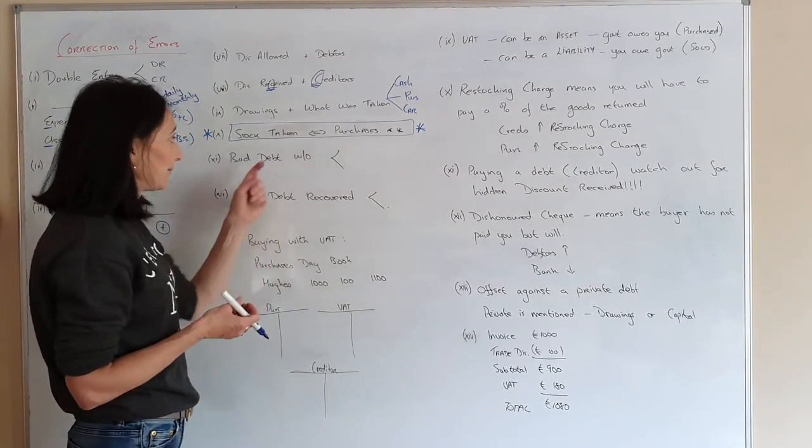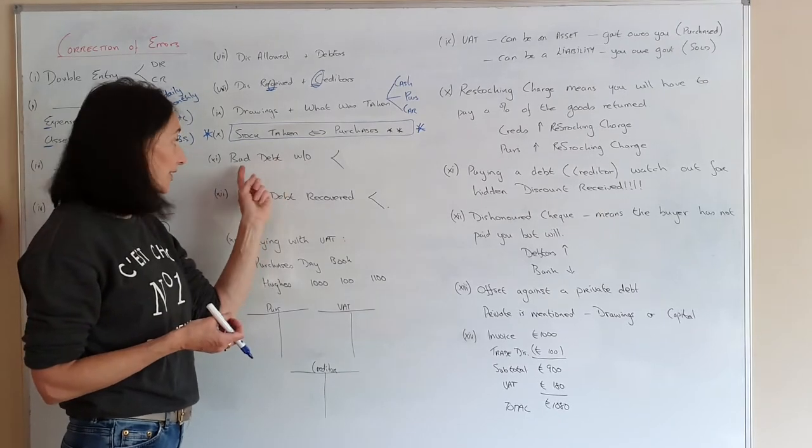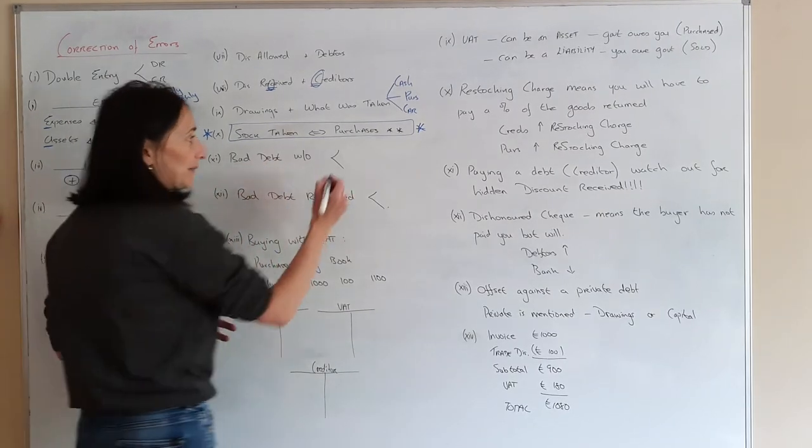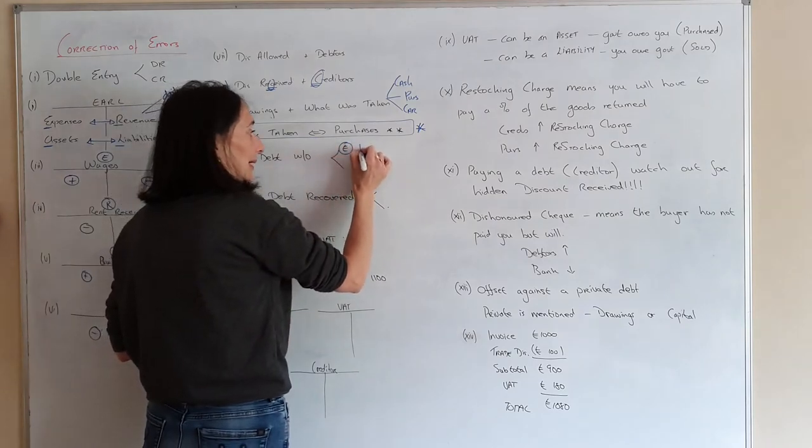Now if people don't pay you back, they have a debt to you and it's turned bad. So it's a bad debt. So you will never get that money. So that means you have got an expense.